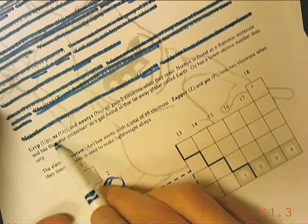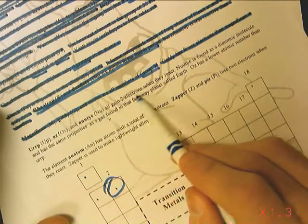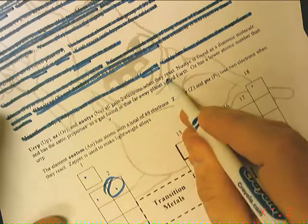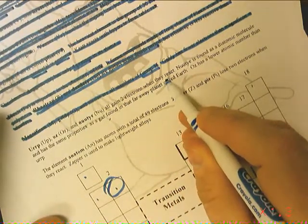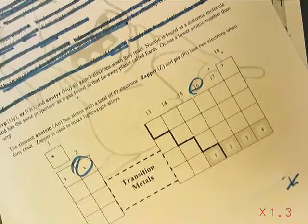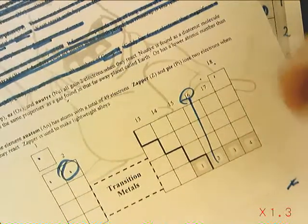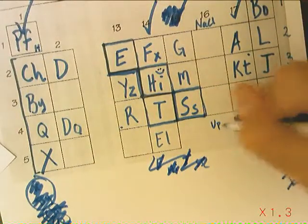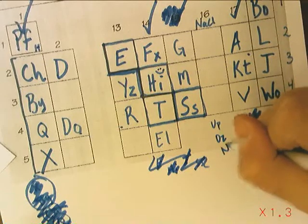ERP, OZ, and NUTI all gain two electrons when they react. They gain two electrons. That means they must have six valence electrons and they gain two to become full. So this means they're in the oxygen family. That's UP, OZ, and NU.